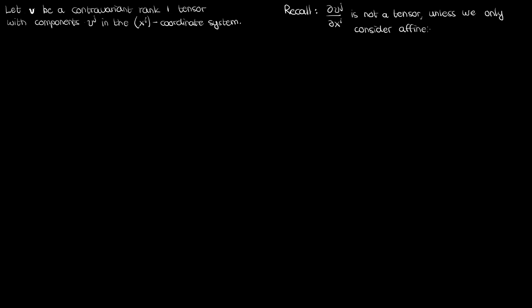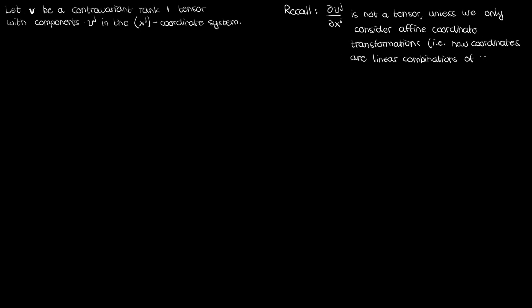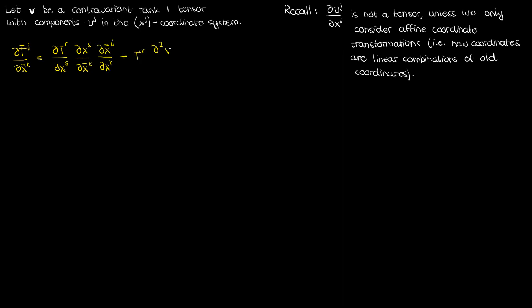unless we were only looking at coordinate transformations that were affine — so coordinate transformations where the new coordinates are some linear combination of the old coordinates. That's because if we look at the transformation law for the simple derivative, we end up with the following expression as we go from the unbarred x super i coordinate system to the barred x super i bar coordinate system. For this expression to represent a tensor transformation law, this mixed partial term would have to be 0, which can only happen in an affine coordinate transformation.